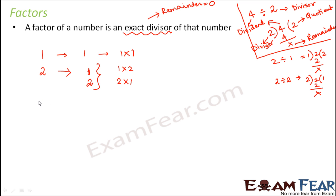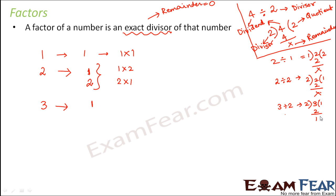Let's look at 3. In the case of 3, 1 is again an exact divisor. Is 2 an exact divisor? No — if you divide 3 by 2, you get a remainder of 1, so 2 is not an exact divisor of 3. The exact divisors of 3 are 1 and 3, so we can write 3 as 1 × 3 or 3 × 1.